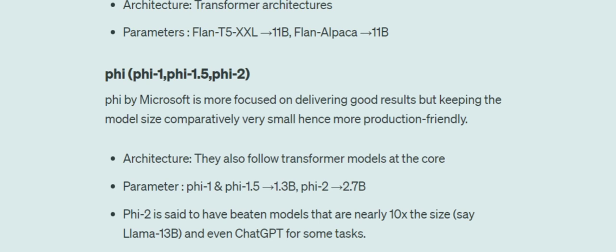Phi-2 is said to be able to beat models nearly 10 times its size, like LLaMA 13 billion, and even ChatGPT on some tasks. It is also more production-friendly — in production, when deploying LLMs, cost and resource consumption are a big concern, so the Phi model can be a great game changer.